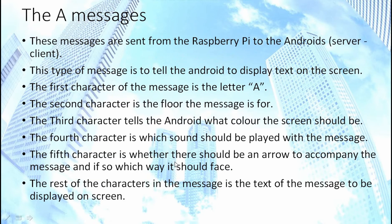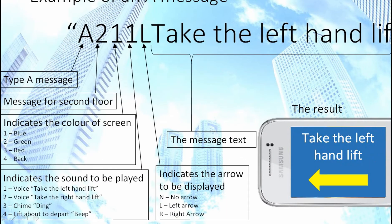They communicate using short messages of text; the first letter in each message defines what the message is for. The A messages are sent from the Raspberry Pi to the Androids (server to client) to tell the Android to display text on the screen. An A message is structured as: first letter A; second letter is the floor the message is for; third letter indicates the colour of the screen; next letter indicates what sound should be played; next letter indicates the arrow to display (left, right, or no arrow); then the rest is the text to be displayed. For example, the message 'A 2 1 1 L take the left hand lift' results in a blue background with a left-pointing arrow and the text 'take the left hand lift.'